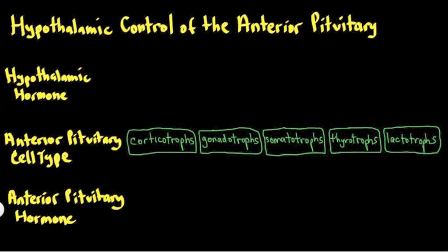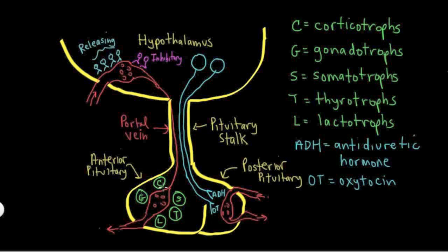Let's take a look at the anatomy and recall that there are five major anterior pituitary cell types: the corticotrophs, gonadotrophs, somatotrophs, thyrotrophs, and lactotrophs. These cell types release specific hormones that are picked up by the capillary network and then carried off to the general circulation.